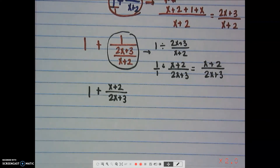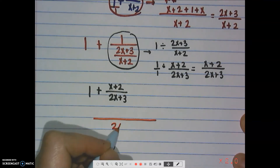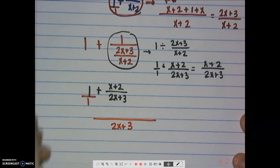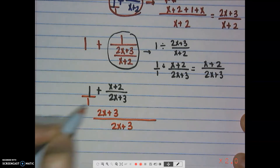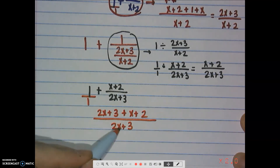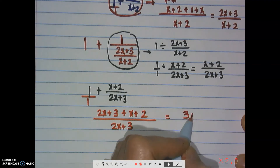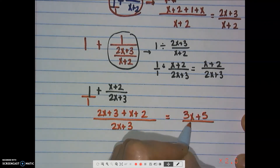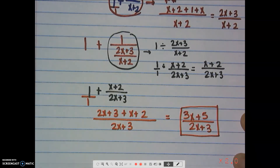That goes in place of the circle, so we have 1 plus (x+2)/(2x+3). That's all that's left. We get a common denominator of 2x+3: multiply the first fraction to get (2x+3), then add (x+2) since it already has the common denominator. Our final answer is (3x+5) over (2x+3).